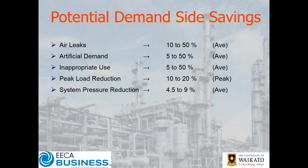If we drop our discharge pressure at the compressor from, say, seven-and-a-half bar to six-and-a-half bar — a one-bar reduction — the compressor is working a lot less hard, which means you'll reduce your power consumption. Depending on the compressor technology, as a rule of thumb we work on between six and nine percent power reduction if you drop that one bar at the discharge pressure on the compressor.